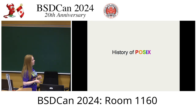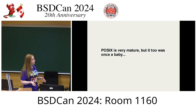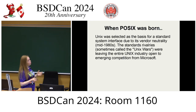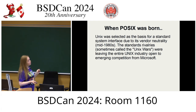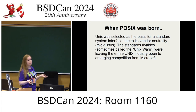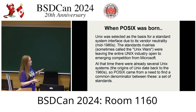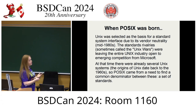Getting into the history: POSIX today, in 2024, is a very mature family of standards, but it was once a baby. When POSIX was born, Unix was selected as the basis for a standard system interface due to its vendor neutrality. This was in the mid-1980s. The standards rivalries — sometimes called the Unix Wars — were leaving the entire Unix industry open to emerging competition from Microsoft. POSIX came from a need to find a common denominator between several existing Unix systems, which is really a set of standards.